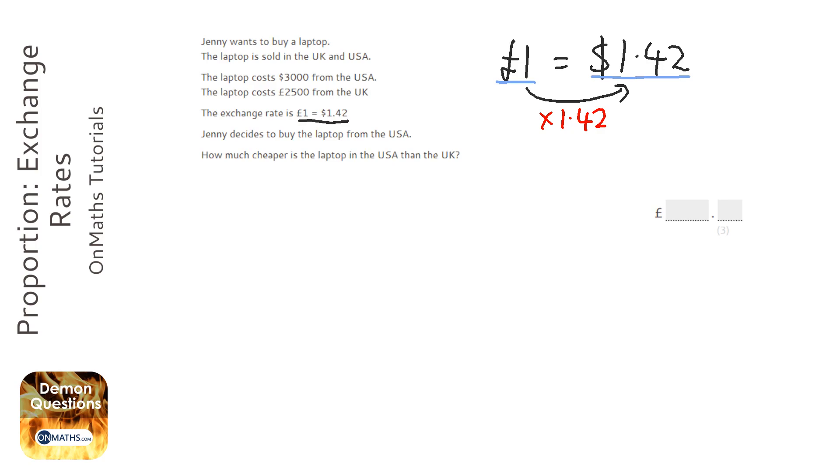So the problem with this question is that it wants the answer in pounds. So we'll need to convert both of these things into pounds. We're actually going the other way. When we go the other way, instead of times, we just divide. So we're dividing both sides, or we're dividing dollars by 1.42 to get to pounds.